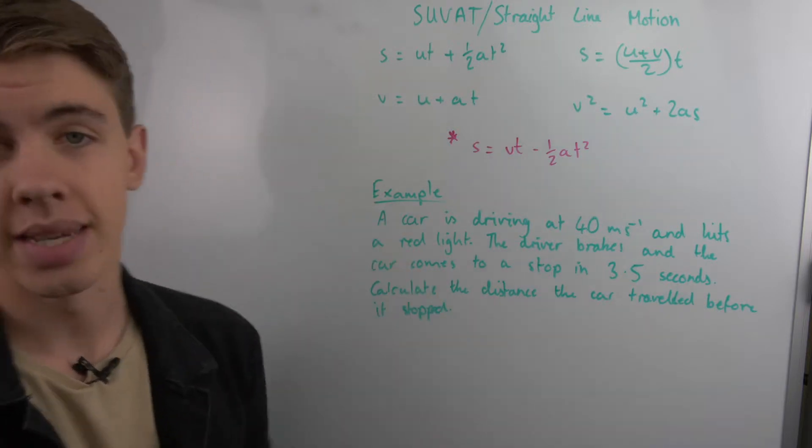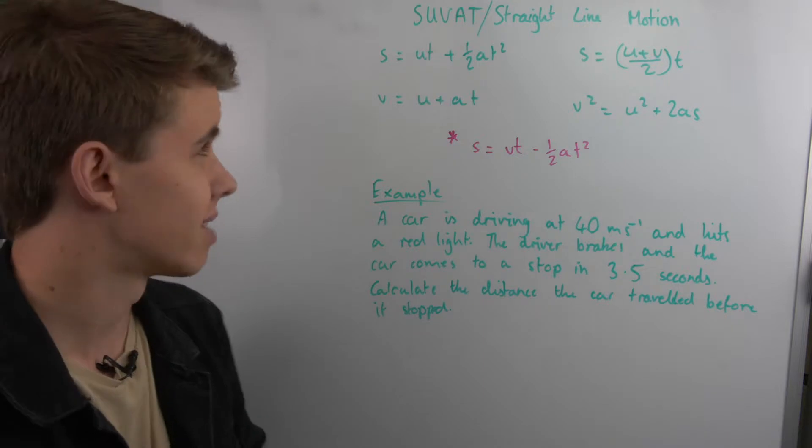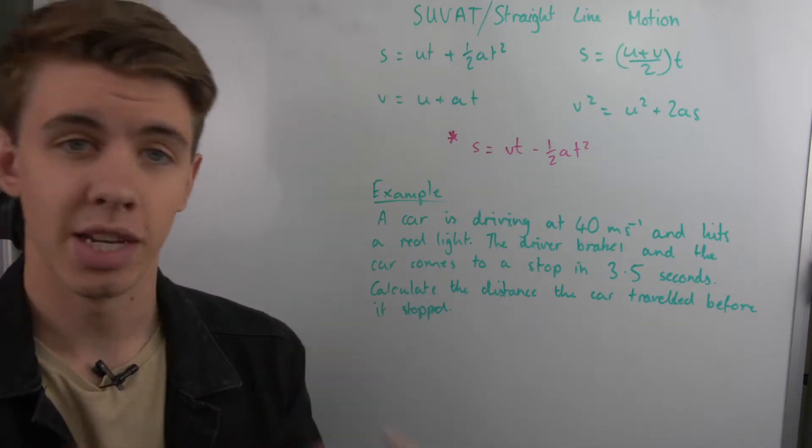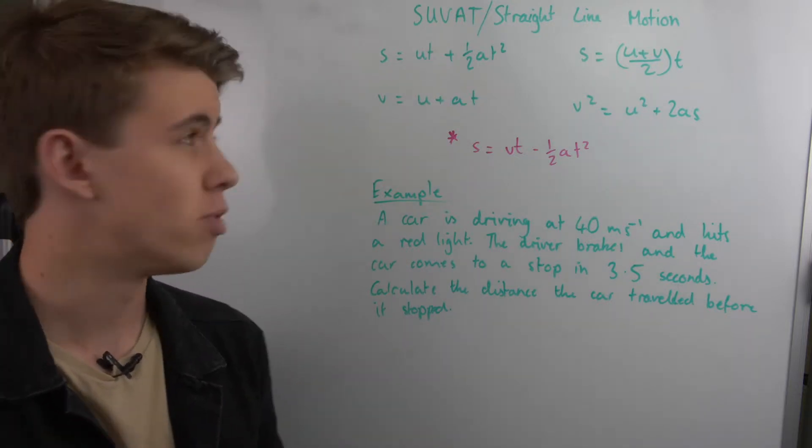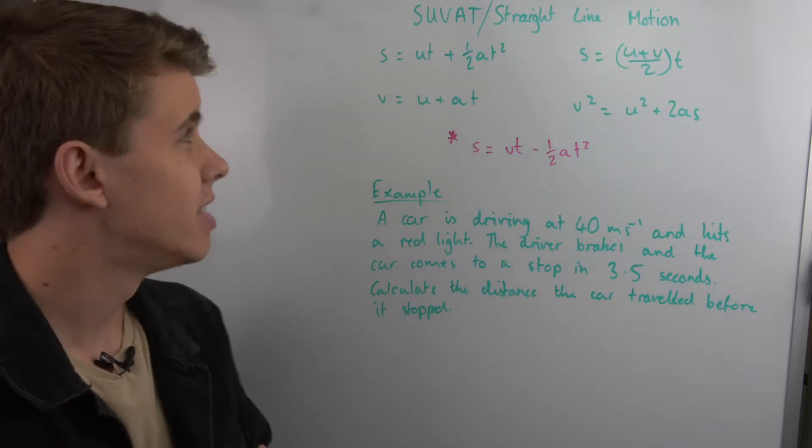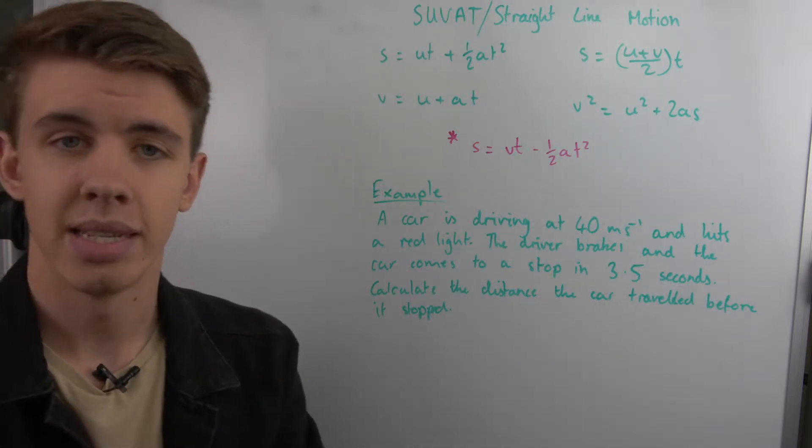So S being displacement, which is the vector form of distance, so it has a direction. U being the initial velocity, velocity in vector form. V is the final velocity. A is your acceleration. And T is the time.